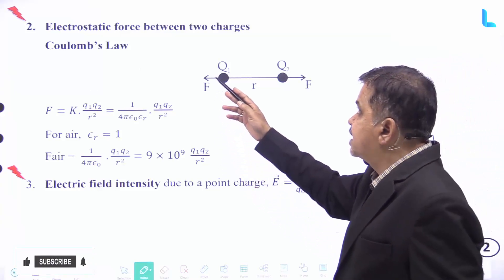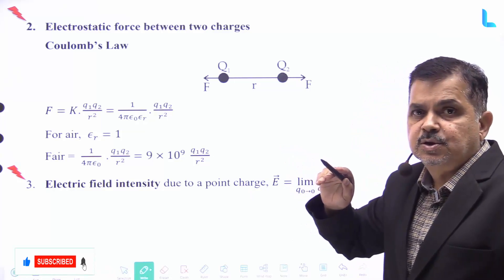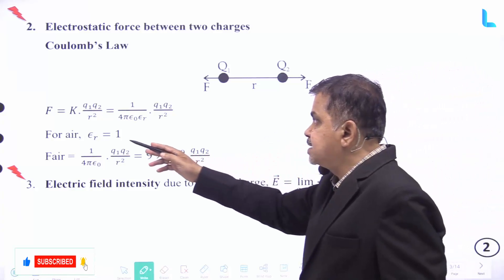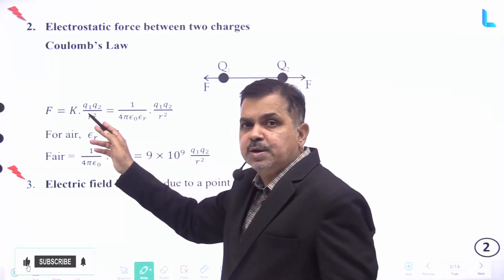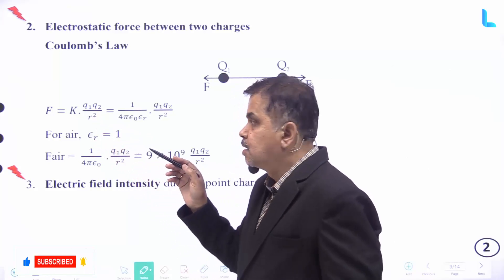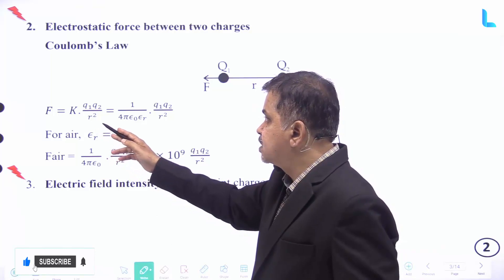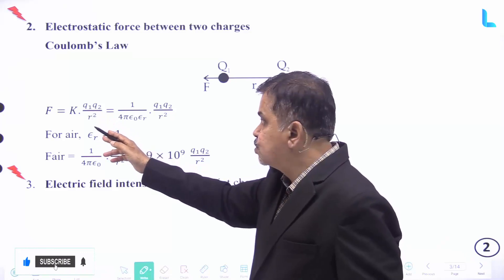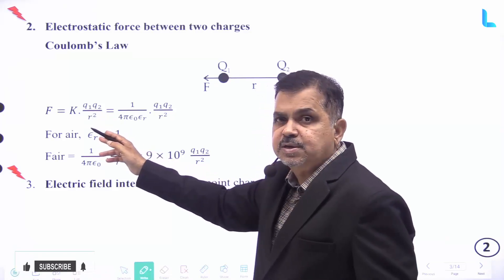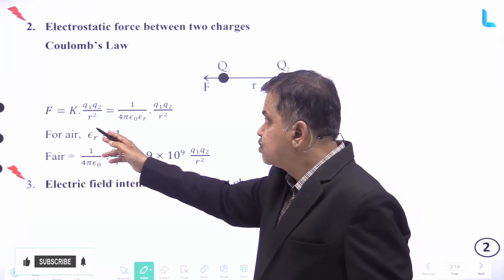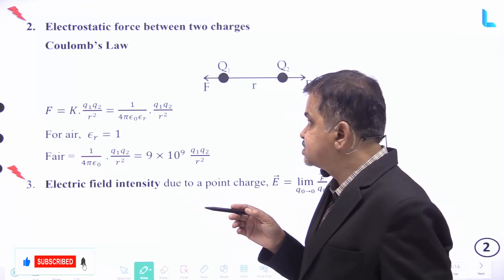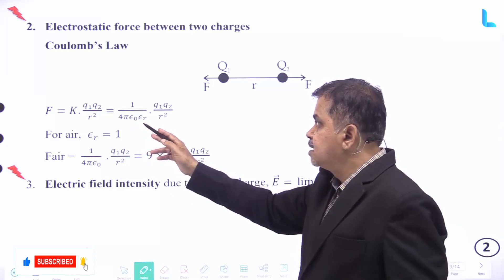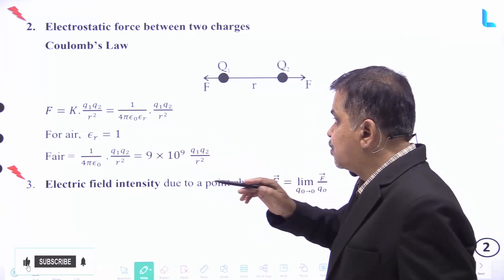Number two, the electrostatic force between two charges, also known as Coulomb's Law. It is given mathematically as F equal to k into Q1 into Q2 divided by r square, where force is directly proportional to the product of two charges Q1 and Q2, and inversely proportional to the square of the distance between them. Here k is equal to 1 by 4 pi epsilon naught into epsilon naught r.